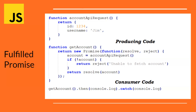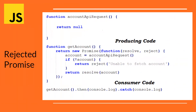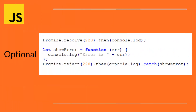Now consider the null scenario — we are sending null purposefully from accountAPIRequest, which means it will enter the else block because account is null and will reject with 'unable to fetch account'. In this case, getAccount.then will not work because there is no resolved value. The catch method handles the error: console.log is the callback function and the rejected value 'unable to fetch account' is passed as its argument, printing that string to the console.